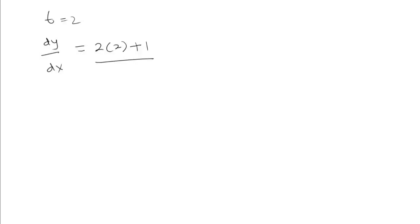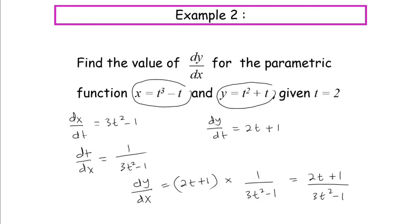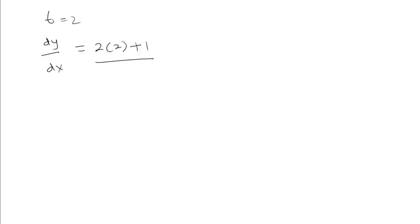The denominator is 3 times 2 squared minus 1, which is 3 times 4 equals 12, minus 1 equals 11. So our answer is 5 over 11.